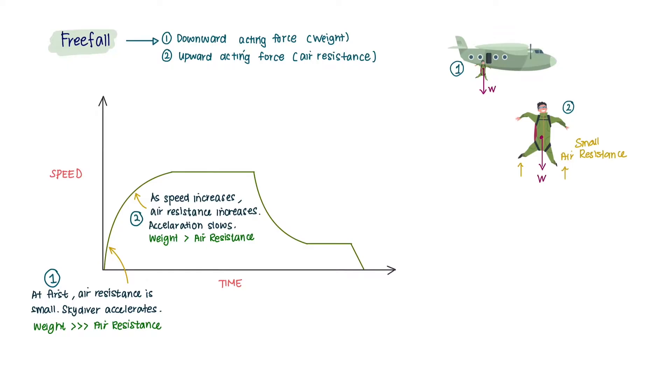As the skydiver speeds up, the air resistance increases, eventually growing large enough to balance the downward weight force. Once the air resistance equals the weight, the forces are balanced.